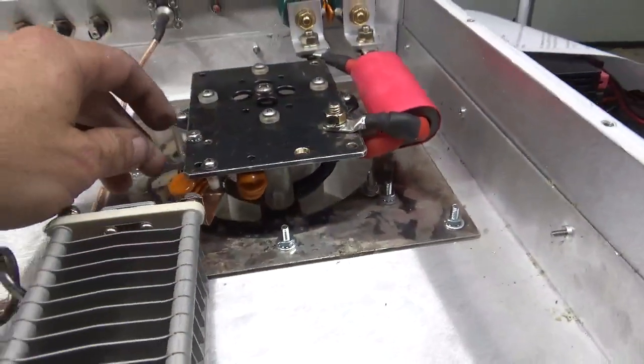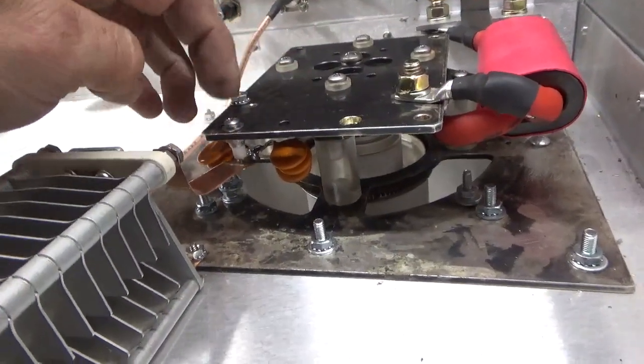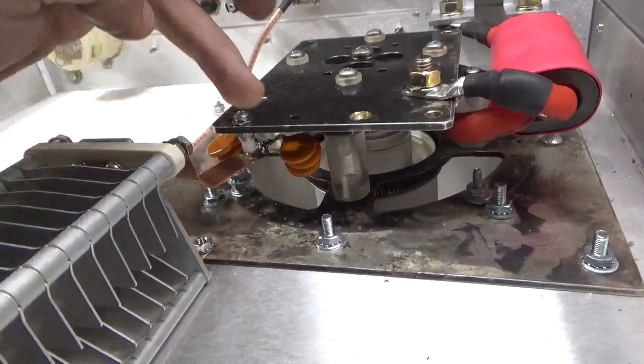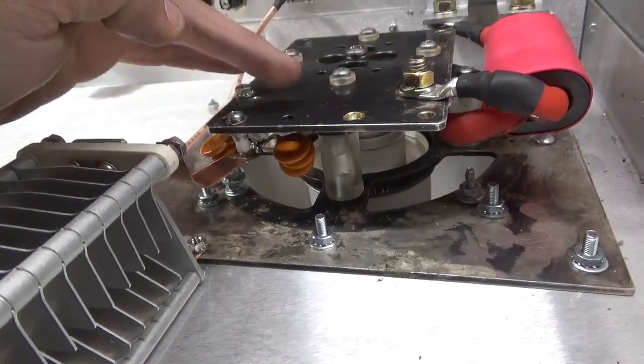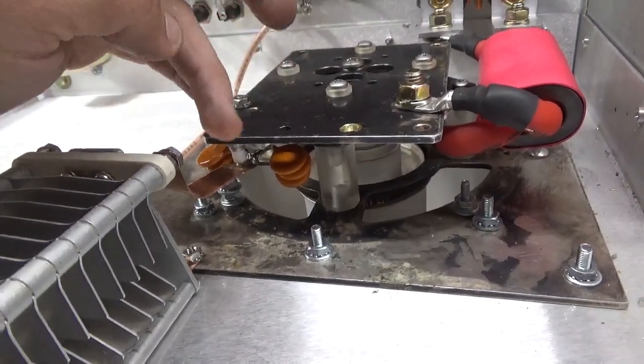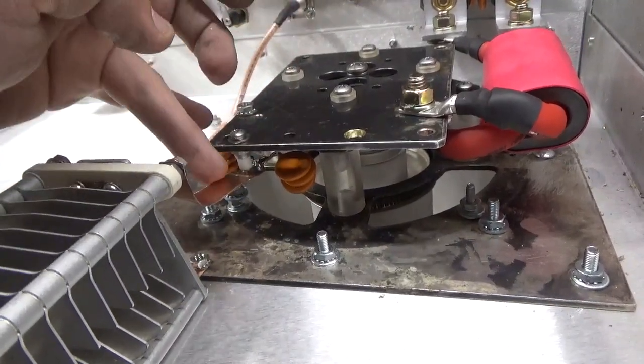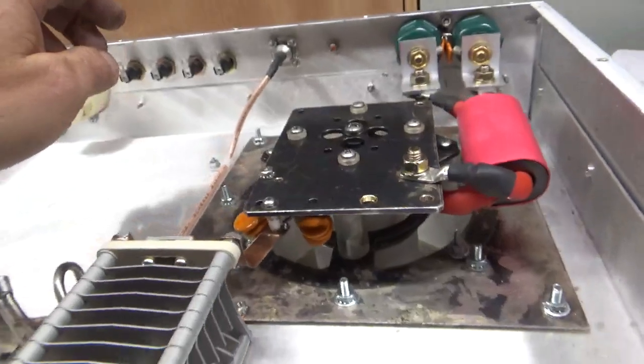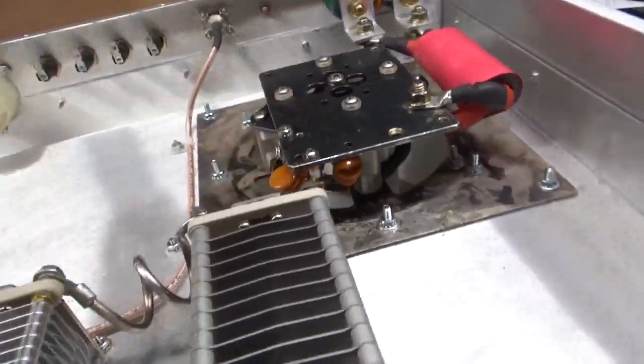What we have going here is we have 3.01 caps connected to the strap. 3 on this side, 3 on that side. The opposite end of each group of 3 goes to either side of the filament. You have 3 caps basically going from here to one side, 3 caps going to the other side. To keep the RF equal across each side of the filament.